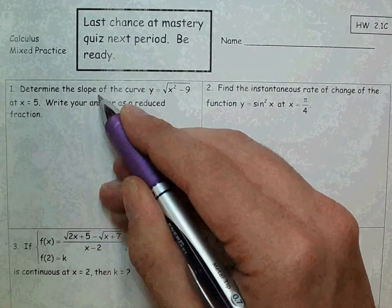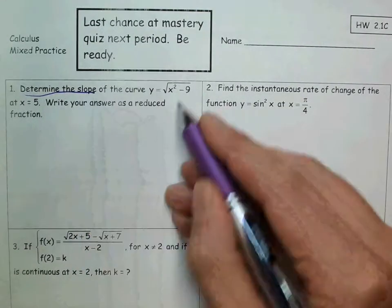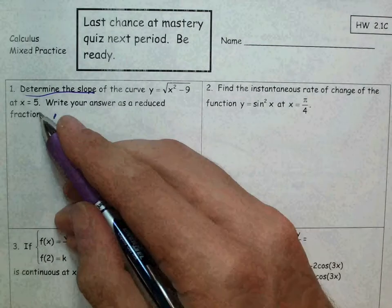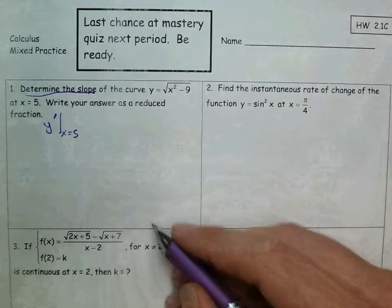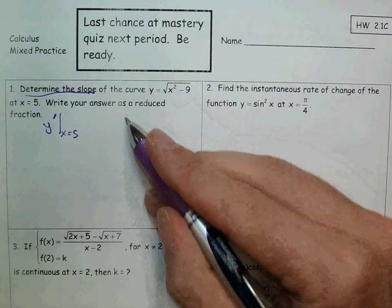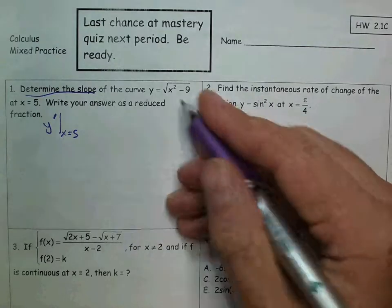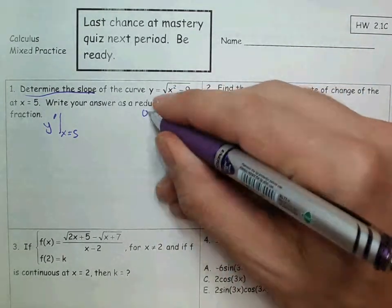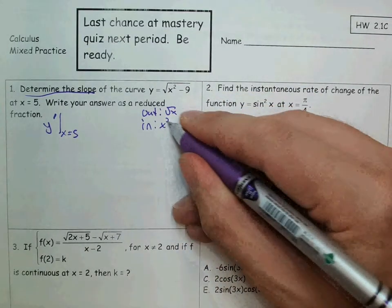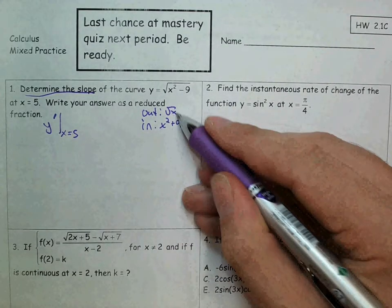On number 1, it says determine the slope of this curve at x equals 5. Determining the slope of the tangent line to a function means finding the derivative. So we're going to need to find the derivative and plug in x equals 5 — that means evaluate the derivative at x equals 5. What you should notice is that to find the derivative, this is a chain rule: there is a function inside of a function. The outside function is square root of x, and the function inside is x squared plus 9. You need to use the chain rule.